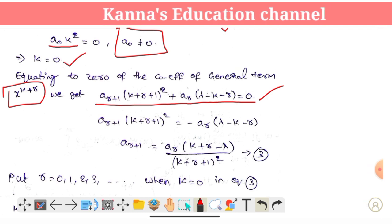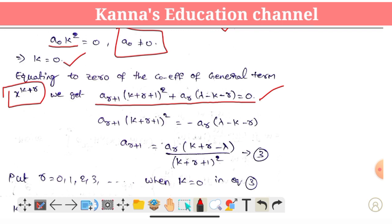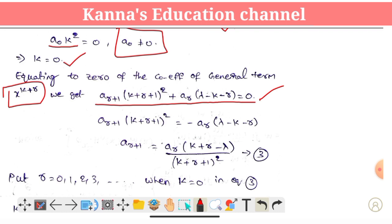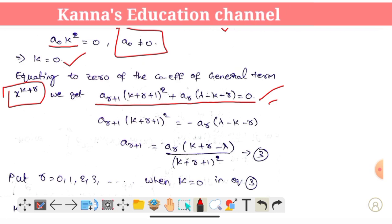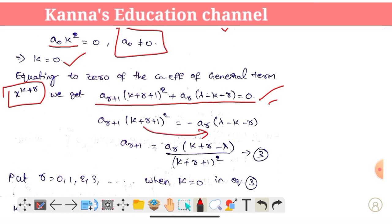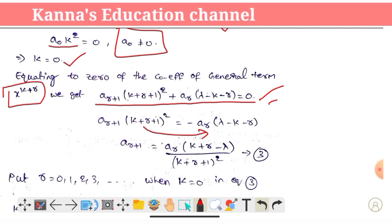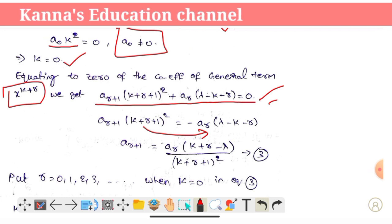Sorry for the disturbance noise. So, a(r+1) into (k+r+1)² equals minus Ar into (λ - k - r). Therefore a(r+1) equals Ar into (k + r - λ) divided by (k + r + 1)², which is equation 3.